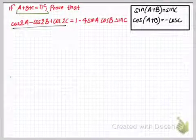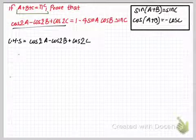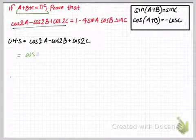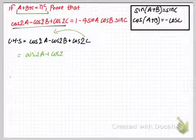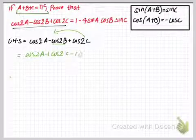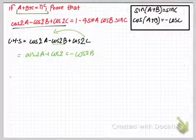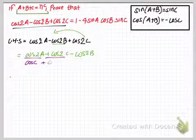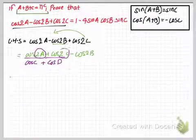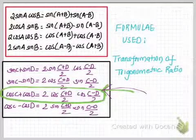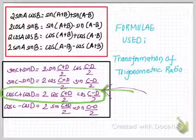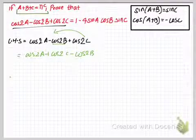Now let me take the left hand side of this equation. I'm going to do a simple rearrangement: bring plus cos C over here and then take minus cos B at last. Now I'm going to use the formula for cos C plus cos D, where C is 2A and D is 2C. The formula is: cos C plus cos D equals 2 cos((C plus D)/2) times cos((C minus D)/2). On applying this formula...